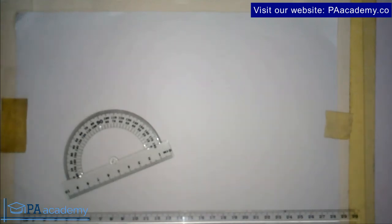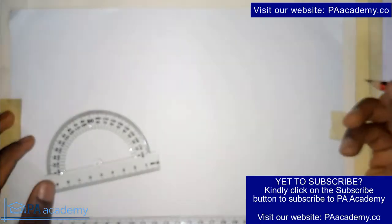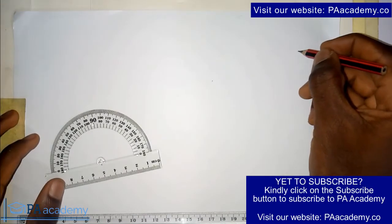Hello everyone and welcome to PA Academy. In this video I'm going to be showing you how to construct a hexagon using your protractor. So when we talk about a hexagon, it has six sides.